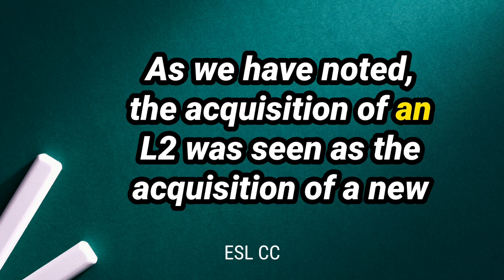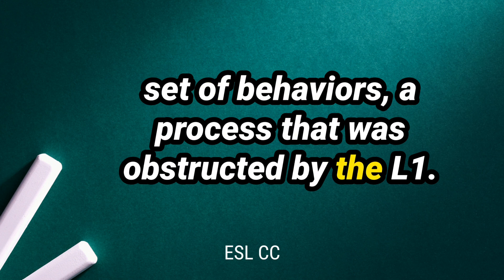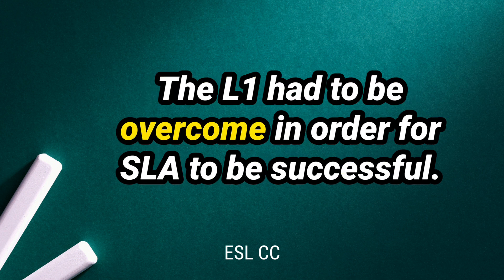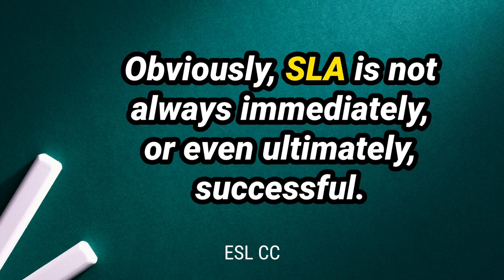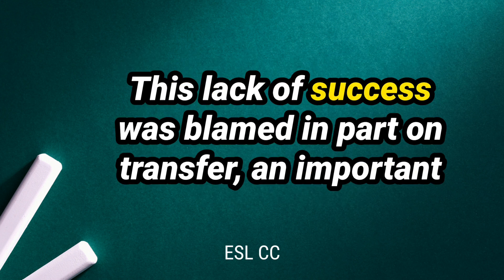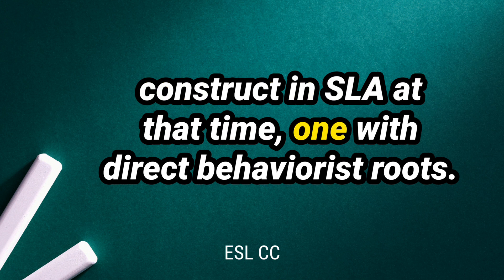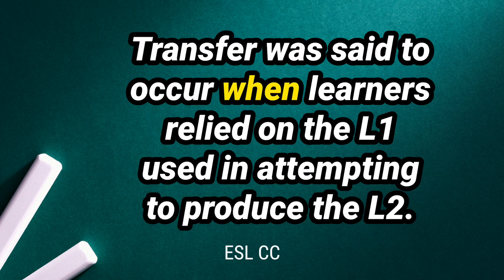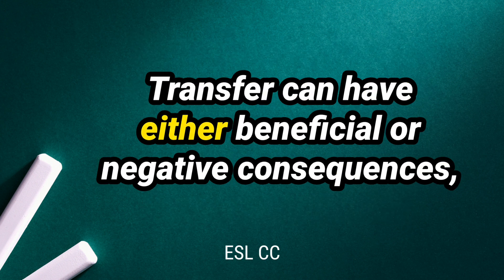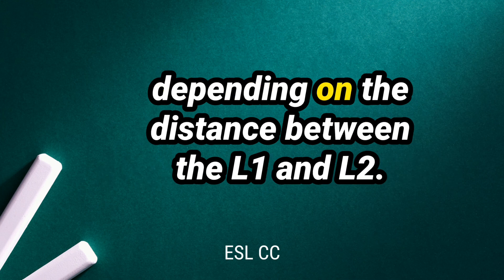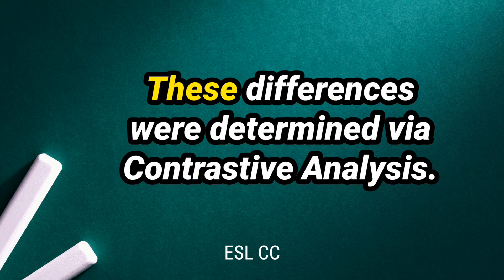The L1 had to be overcome in order for SLA to be successful. SLA is not always immediately, or even ultimately, successful. This lack of success was blamed in part on transfer — an important construct in SLA at that time, one with direct behaviorist roots. Transfer was said to occur when learners relied on the L1 when attempting to produce the L2. Transfer can have either beneficial or negative consequences, depending on the distance between the L1 and L2. These differences were determined via contrastive analysis.